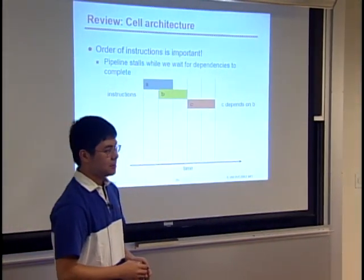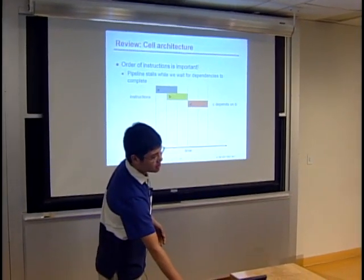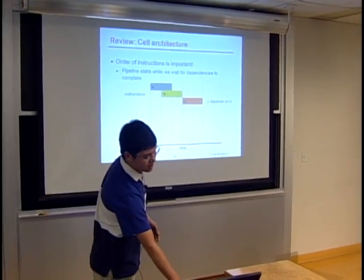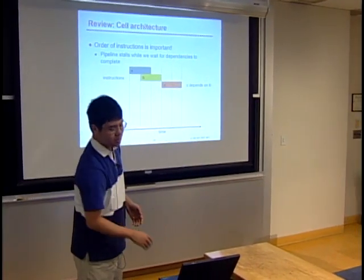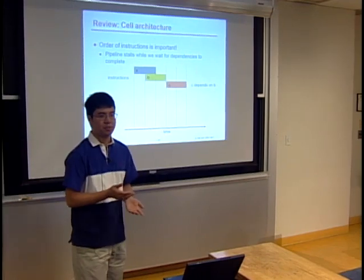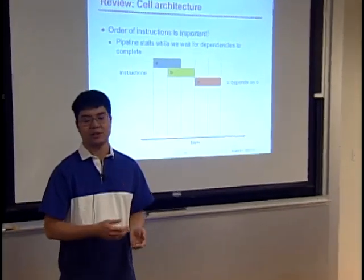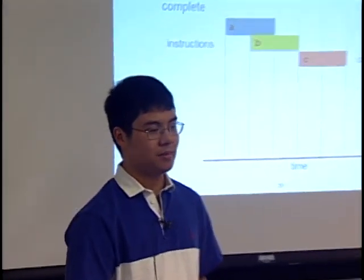Static branch prediction on the cell means that what's predicted for the branch is not going to be affected by the history of which branches have been taken. Some other processors do use this historical information.